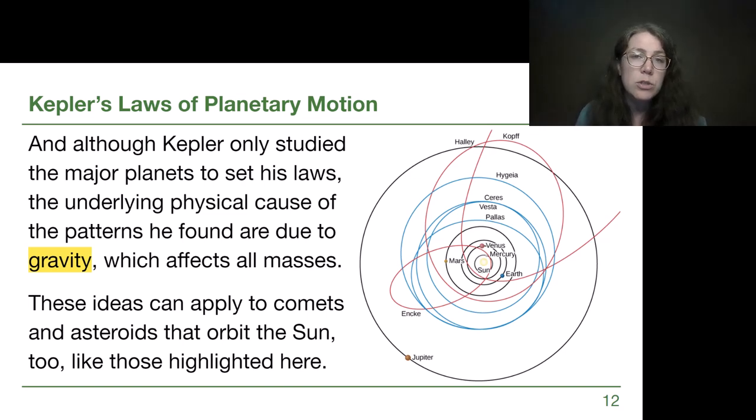Now Kepler was just looking for the underlying patterns in the math, and he didn't have an understanding of what was causing those patterns. It would take until Isaac Newton figuring out the universal law of gravitation, the subject of our next video, for us to have this full description of what is causing the motions that we see. So in that next video, we'll get to see what causes all of these laws to work. I'll see you in the next video.